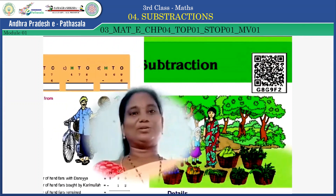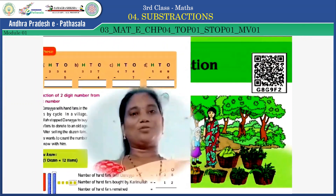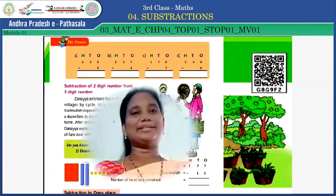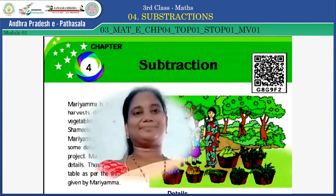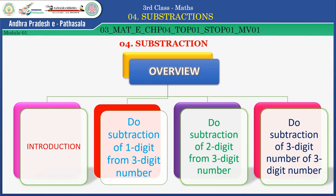In this lesson we are going to learn some models. Before we enter into the lesson, let's see the overview. This unit is divided into 4 parts: first, introduction; second, subtraction of 1 digit from a 3-digit number; third, subtraction of 2 digits from a 3-digit number; and fourth, subtraction of a 3-digit number from a 3-digit number.